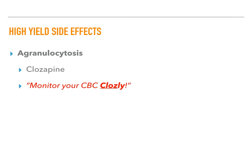Agranulocytosis is extremely high yield — think clozapine, one of the atypical antipsychotics. A question may describe a psychotic patient started on a drug and ask what to monitor. The answer is a CBC, because clozapine requires routine CBC monitoring to watch for agranulocytosis. The mnemonic: monitor your CBC closely, like clozapine. This shows up on nearly everyone's exam.